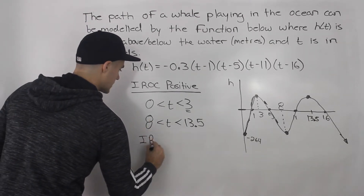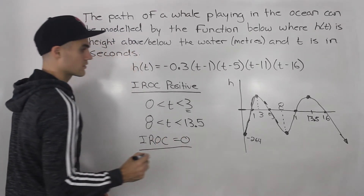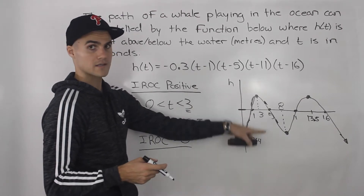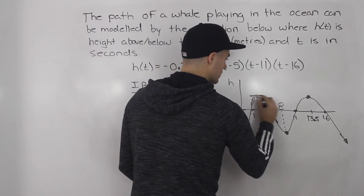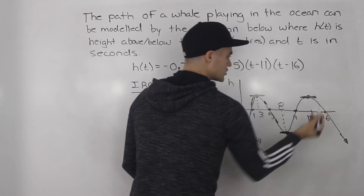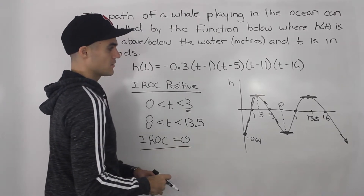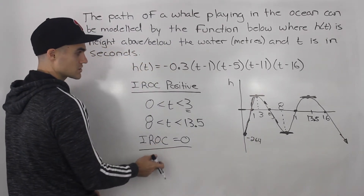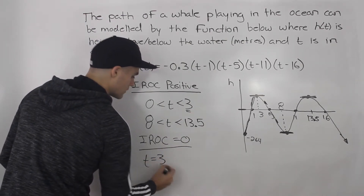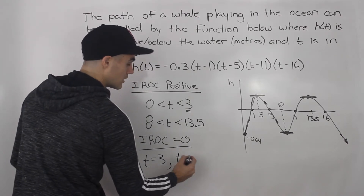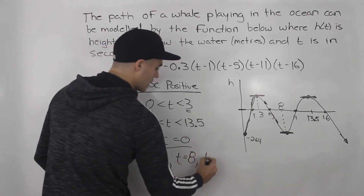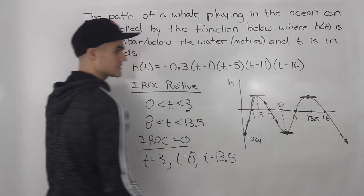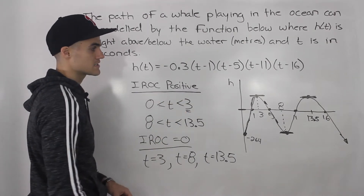The instantaneous rate of change equals zero at local maximum or local minimum points, because the tangent line at those points is horizontal, giving a slope of zero. So the instantaneous rate of change is zero at approximately t = 3 seconds, t = 8 seconds, and t = 13.5 seconds.